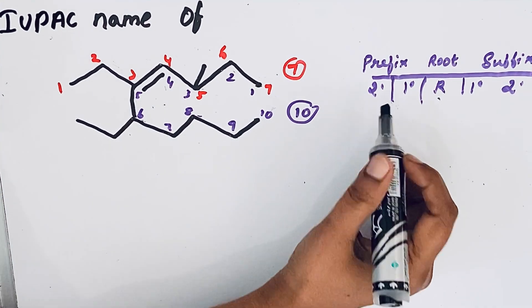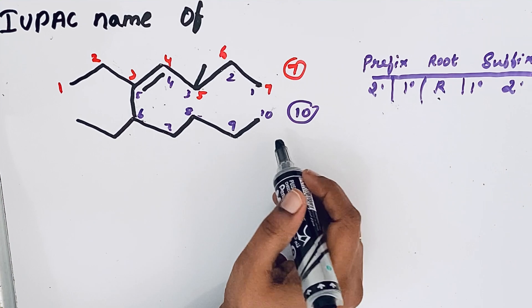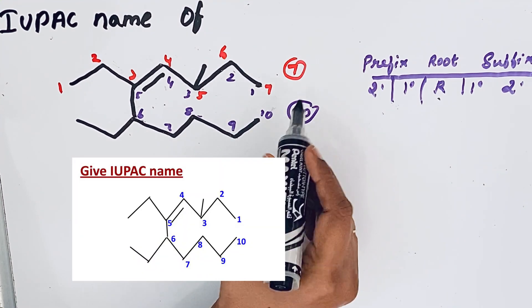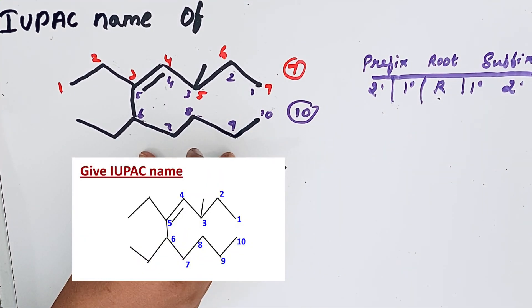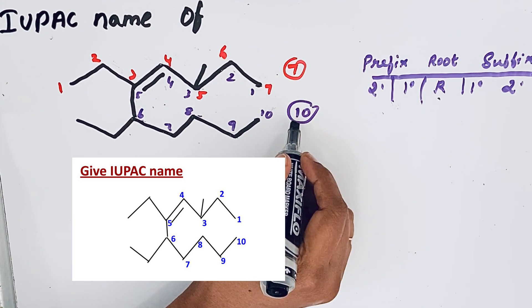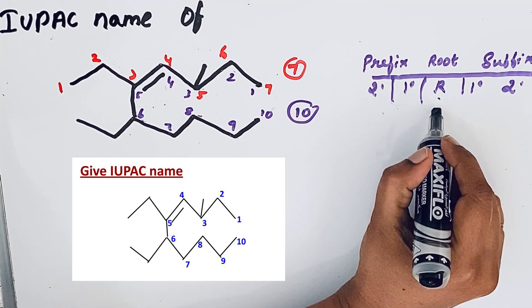Here is a format. So using the format now we are going to write the IUPAC name. This parent chain contains ten carbon atoms, so the root word is dec.